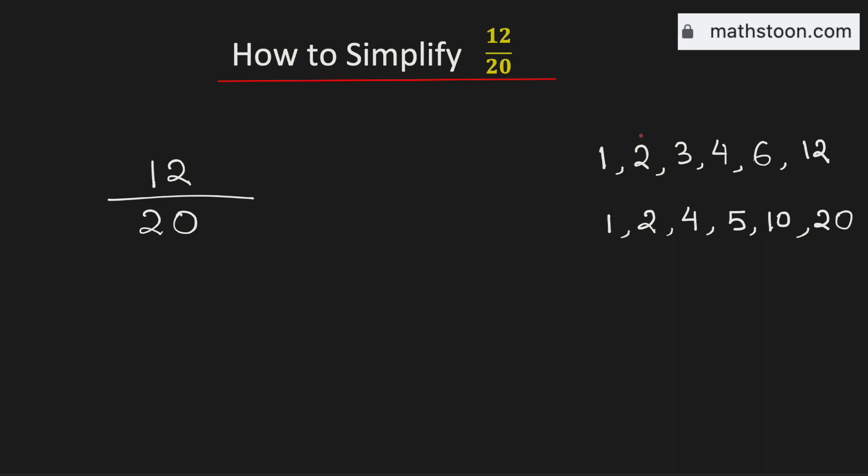Among these the common factors are 2 and 4. So the greatest common factor of 12 and 20 is 4.